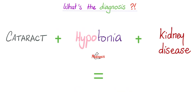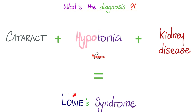Next: a young patient has cataract plus hypotonia plus kidney disease — usually renal tubular acidosis. What's the diagnosis? The answer is Lowe syndrome.